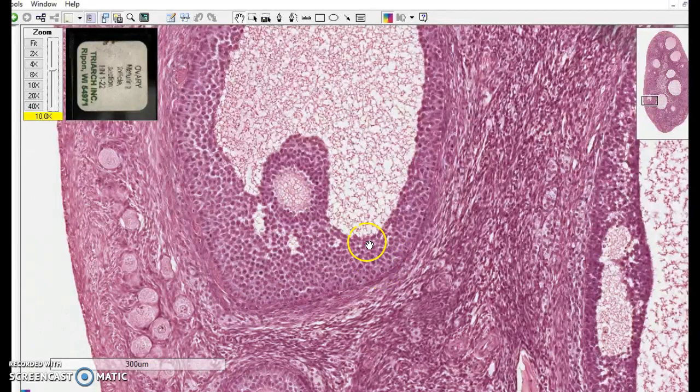So basement membrane, stacks of cells, you'll see it again in the context of an ovary, a mature follicle or graphene follicle in an ovary. Stratified cuboidal epithelium.